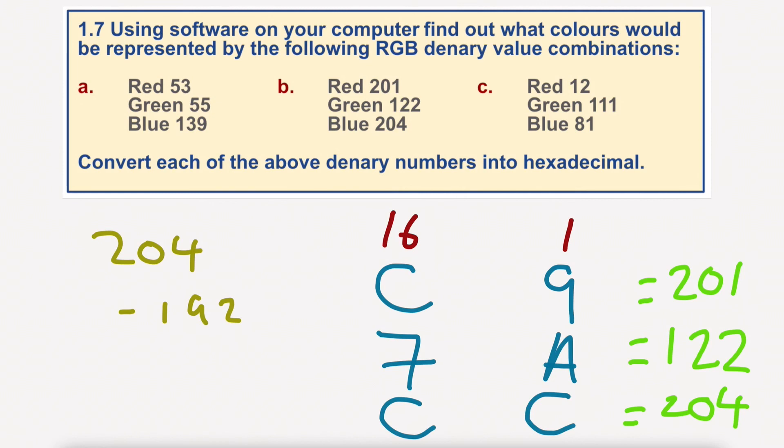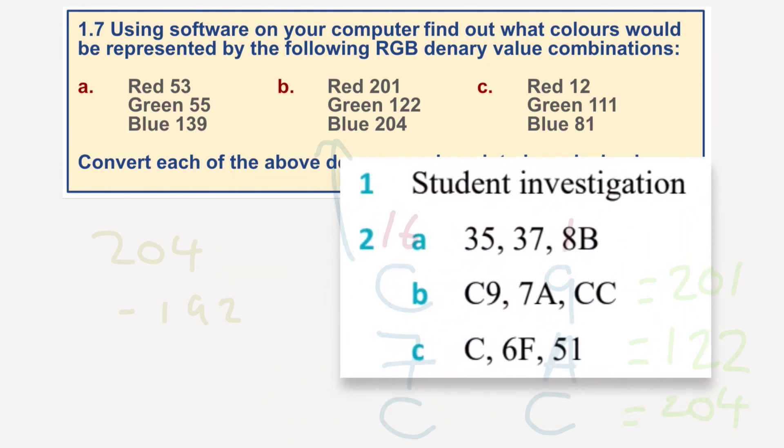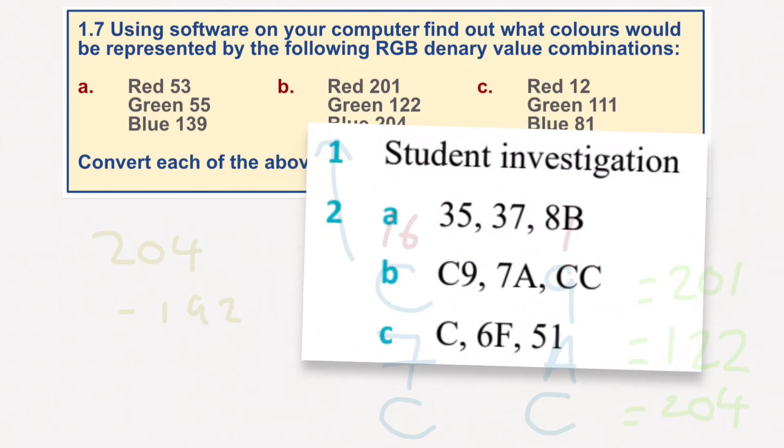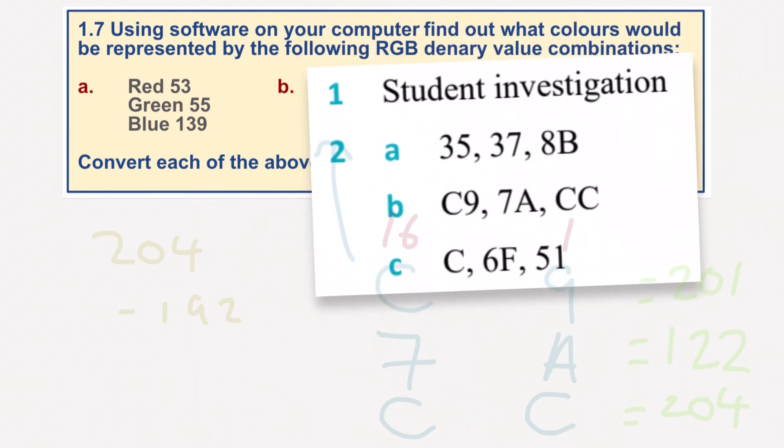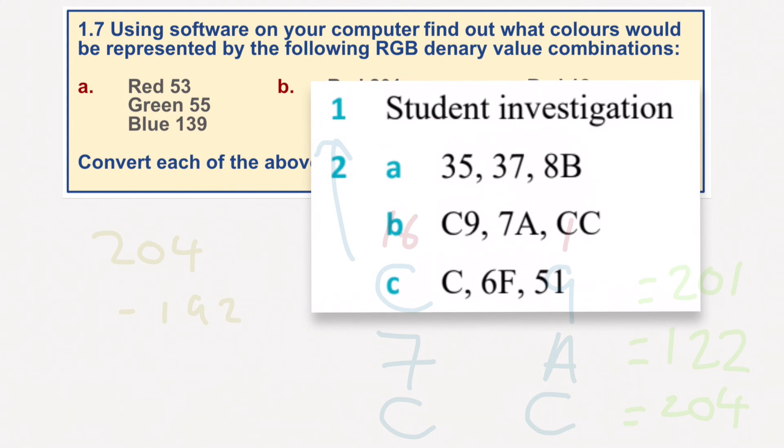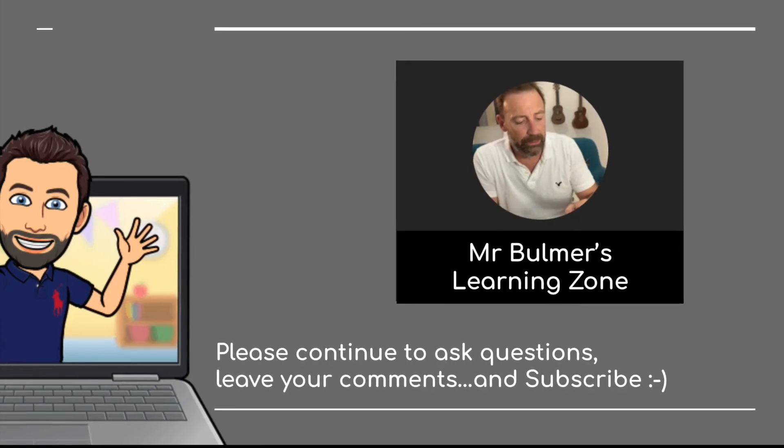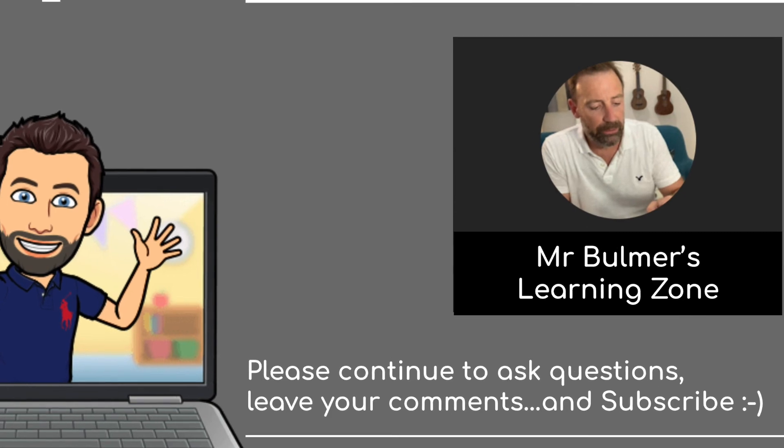So there are our answers for B. You can see the first part, we did a bit of an investigation. And the second part, there we go. So we have, I think I was right there, C9, 7A, CC. The first one is 35, 37, 8B. And C is C, 6F, 51. That is it for now. Join us for 1.8. Thank you very much indeed.